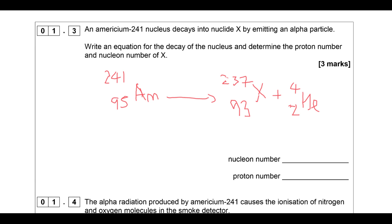The question wants us to specifically identify its nucleon number - that's 237. Does it specifically want its proton number? That is 93, because it's lost four nucleons and two protons. Hopefully nice and straightforward.